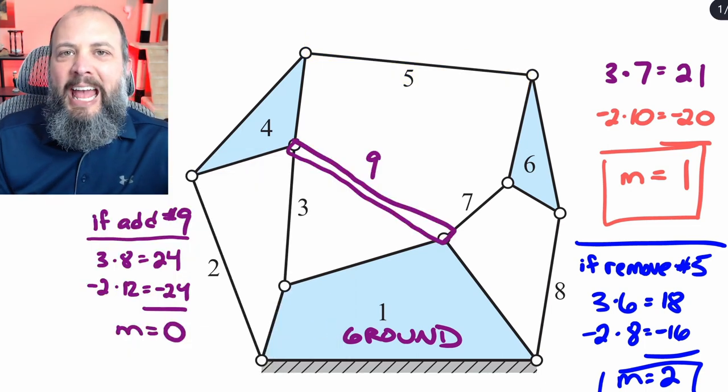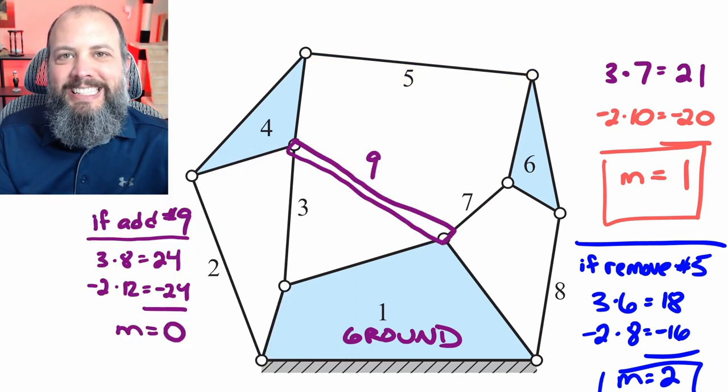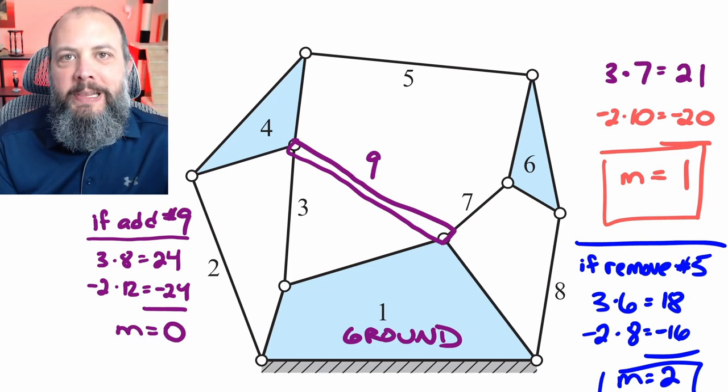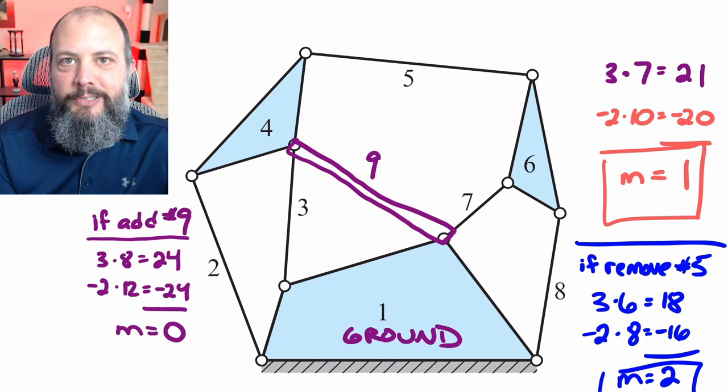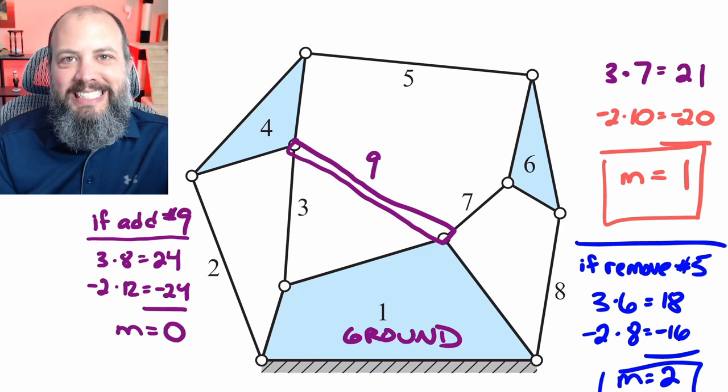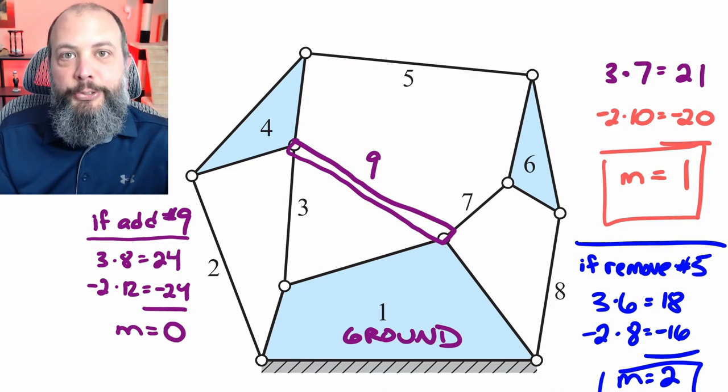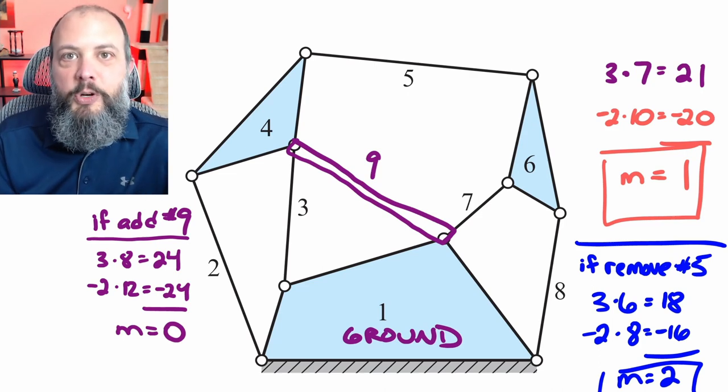Oppositely, how about if we added an extra link? I'll label it as link nine right across the middle. When adding this, we've added one more link and two more joints, and this results in M equals zero. Mobility of zero means that the system is rigidly locked. It is a structure and nothing can actually move.